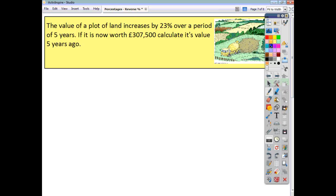And our last question, the plot of land. What's the current value? Well, it's gone up in value, so it's the original price, which is represented by 100%. It's gone up by 23%, which gives us 123%.